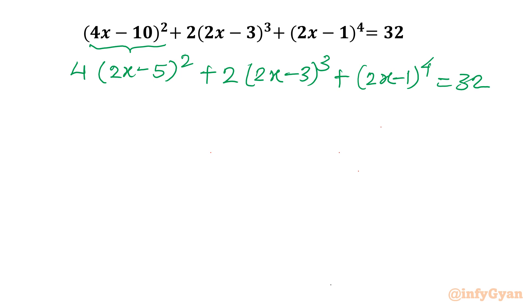Now the substitution is clearly on 2x - 3. If I give that substitution, then 2x - 5 becomes t - 2 and 2x - 1 becomes t + 2, which would be a little complicated. So let us do one algebraic manipulation — I will divide the whole equation by 16.